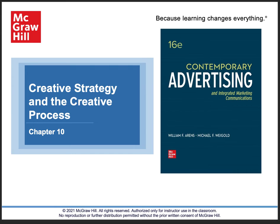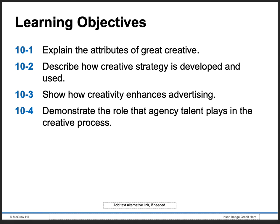Here are some of the things covered in this chapter: the attributes of great creative — attributes just as descriptors or characteristics, things that describe something. Then they'll go through the creative strategy in detail, how it's developed and used, how it enhances advertising. And then how does an agency talent play a part in the creative process — you've got copywriters, people handling written or spoken word, you've got graphic artists, music, and a host of different ways to catch people's attention.